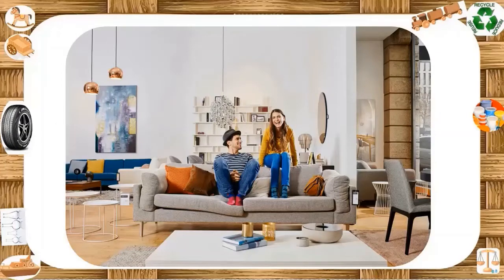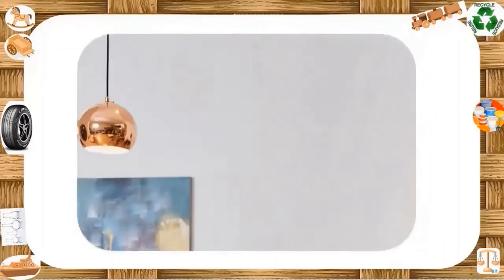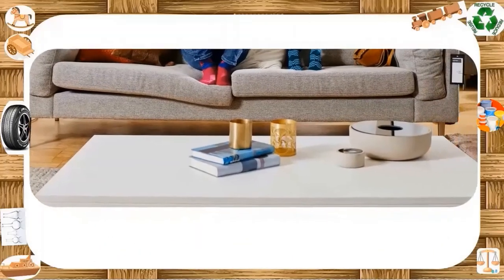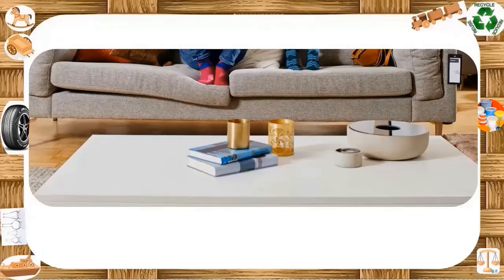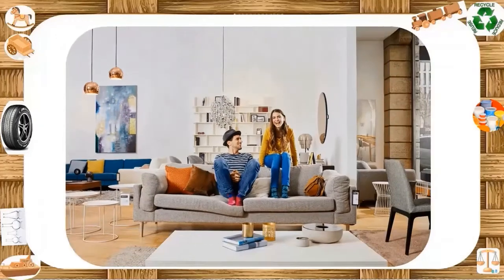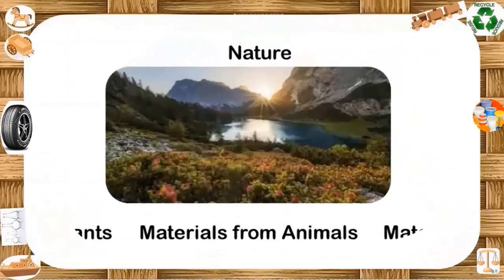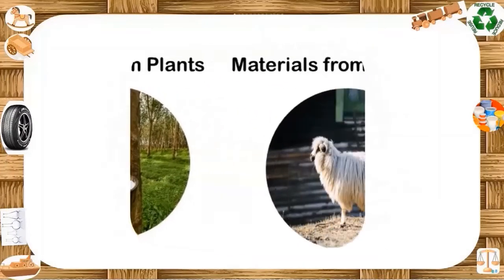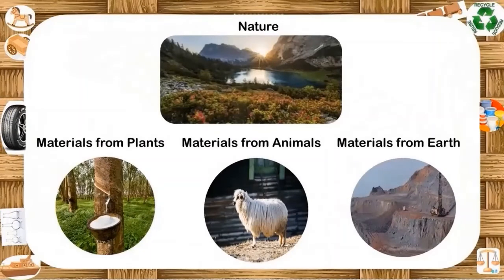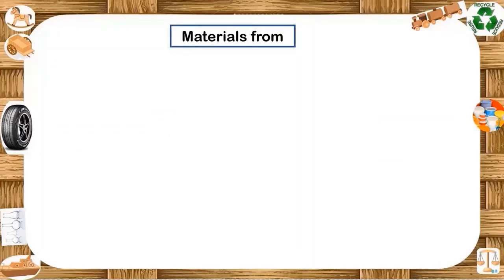We use several things in our daily life. They may look and feel different. Some are hard and shiny, some are hard and rough, some are soft and can be stretched. They are different because they are made of different materials. We get many of these materials from nature — some from plants and animals, and some are dug out from the earth. Plants and animals provide us with a variety of natural materials that are very useful for humans. Let us look at a small summary of what we are going to see.